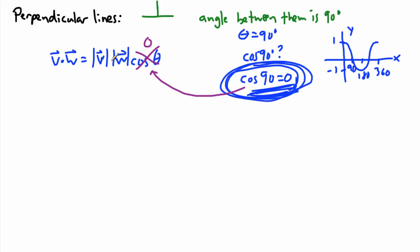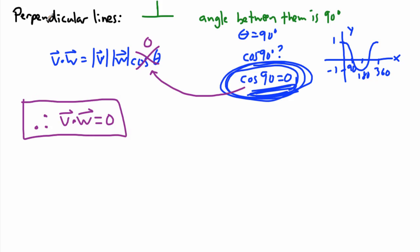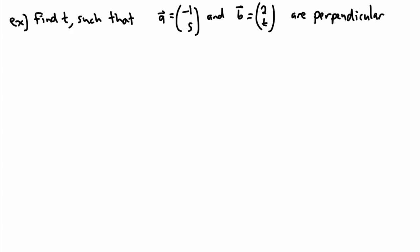Because cosine of 90 is zero, that means the entire right-hand side becomes zero — zero times anything is still zero. So v dot w equals zero. This is really important: if you have perpendicular lines, the angle between them is 90 degrees; cosine of 90 is zero; plug that into the equation and you get v dot w equals zero. We might use this to find conditions that make vectors perpendicular, or solve for unknowns.